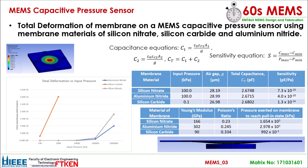In this presentation, the total deformation of the membrane for a MEMS capacitive pressure sensor using silicon nitrate, silicon carbide, and aluminum nitride is presented. When input pressure was applied to the membrane, the membrane will deflect accordingly. The relationship between total deformation and input pressure can be seen in the constructed graph, whereby the total deformation on the membrane increases as the input pressure asserted increases.